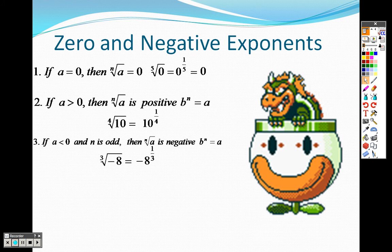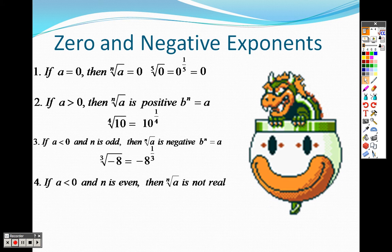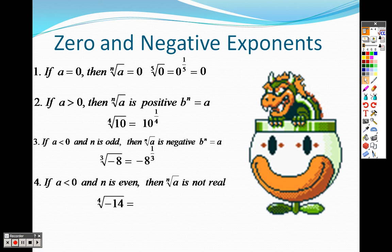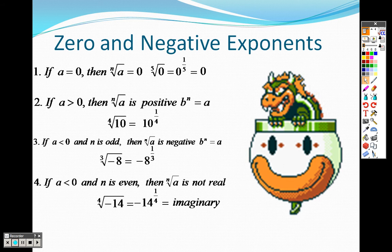If a is less than zero and n is even, then you're not going to get a real answer. If you have something even underneath a root sign, or if you have a root that's even—the fourth root, sixth root, eighth root, tenth root, square root—and negative underneath, you're going to get an imaginary answer. That makes sense. Negative 14 to the one-fourth will be an imaginary answer, just something to keep in mind.